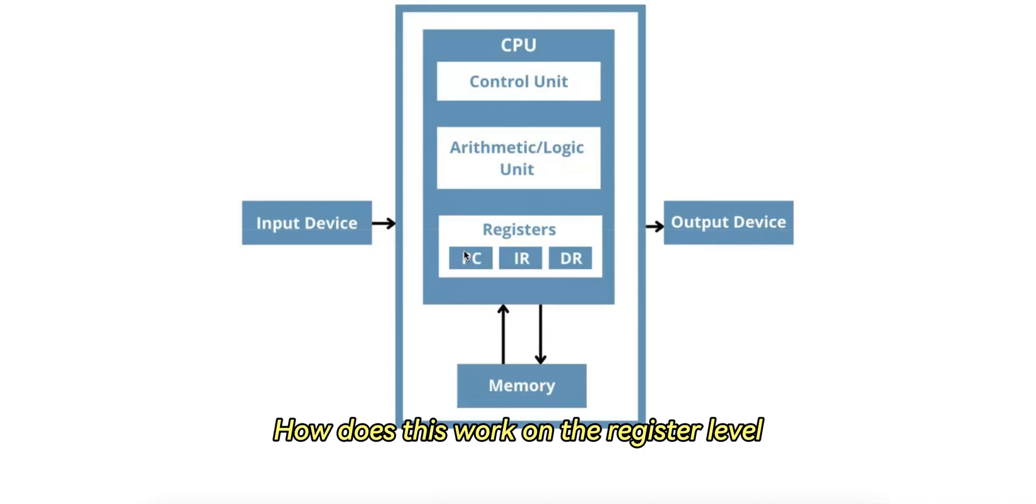The ADD R1, R2, R3 instruction tells the CPU to add the values stored in register R2 and register R3. The result of this addition is stored in register R1.